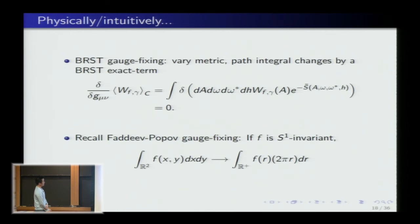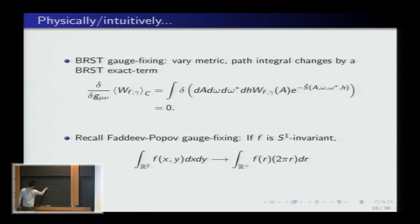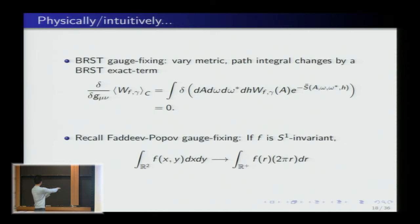A bosonic version of this is the Faddeev-Popov gauge-fixing procedure. When you want to integrate a gauge-invariant function, say an S¹-invariant function over R², and rewrite it as an integral over gauge orbits (R²/S¹ ≅ R₊), you must pick up a Jacobian factor for the volume of each orbit. When you pick a different slice, the Jacobian changes because it depends on the angle between your slice and the gauge orbit. Coherence of these changes — ensured by the BRST/BV structure — guarantees independence of your choice of gauge-fixing slice and metric.